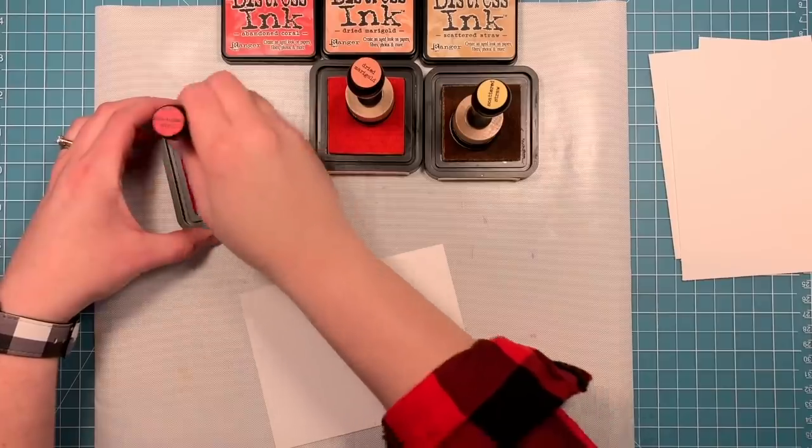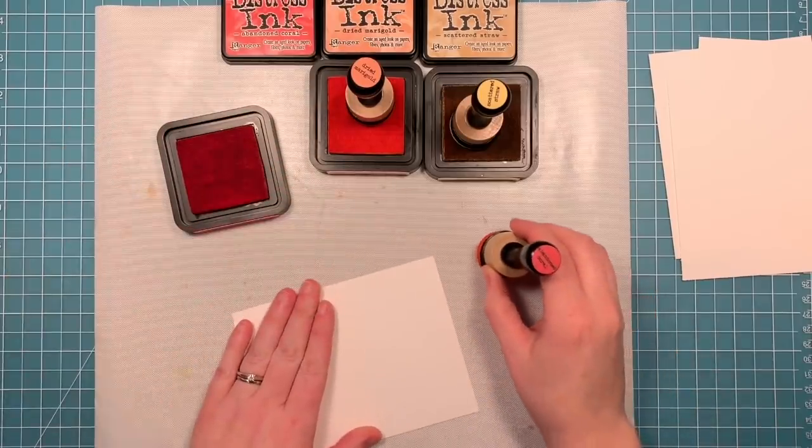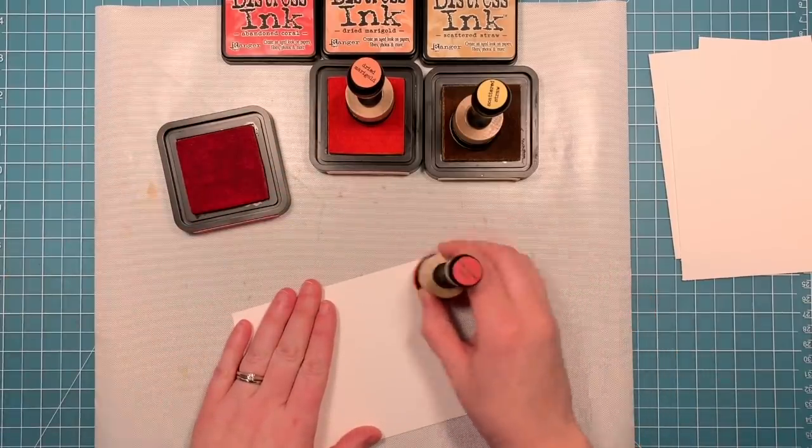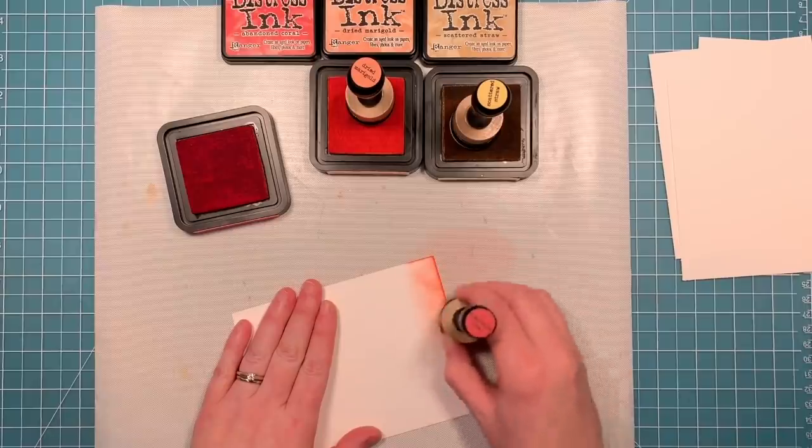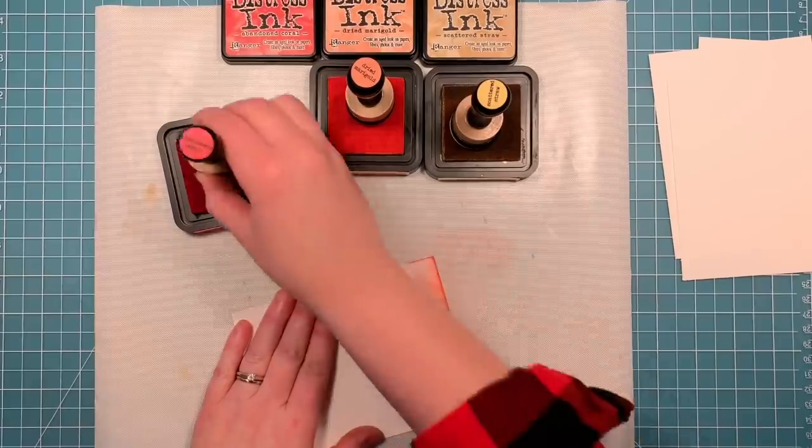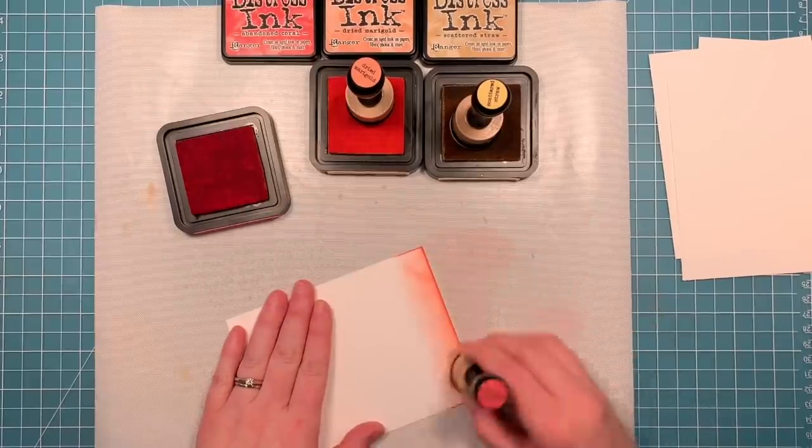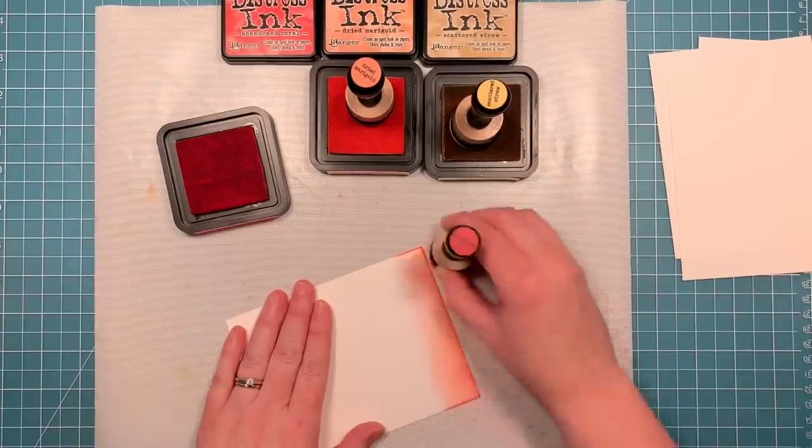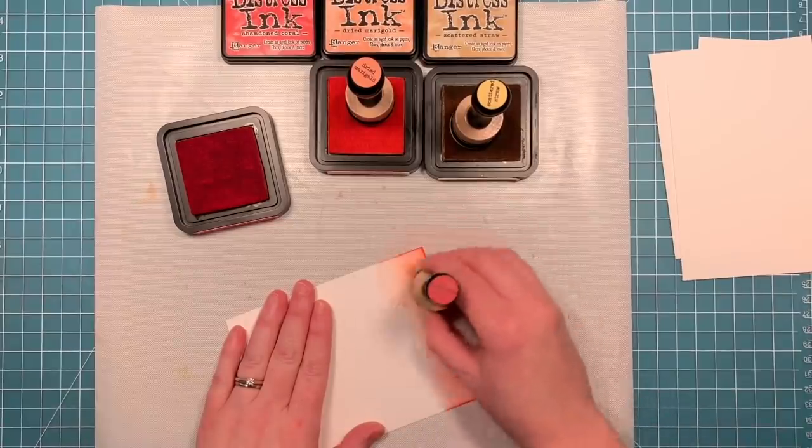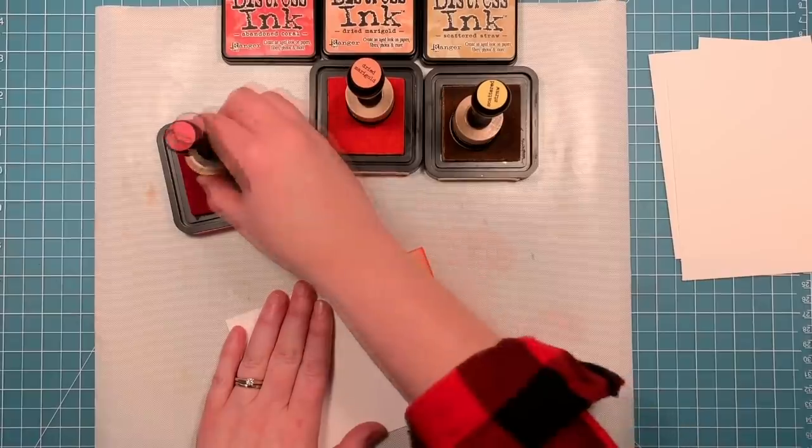I have abandoned coral, dried marigold, and scattered straw and I'm making a peachy pinky sunset variegation across my card. I'm starting with the abandoned coral and this will be on the top.